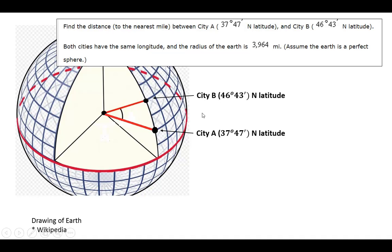To find the distance between the two cities, we need to calculate an arc length, which requires knowing the angle theta. The radius of the Earth is given as 3964 miles.